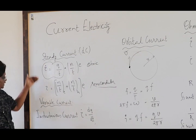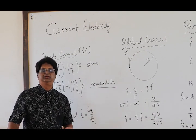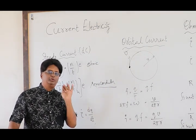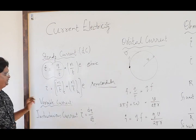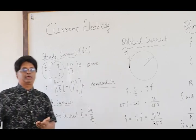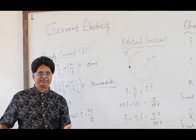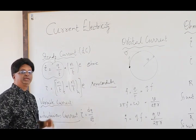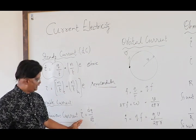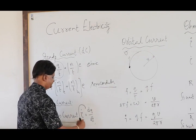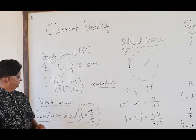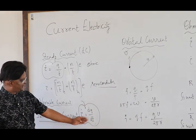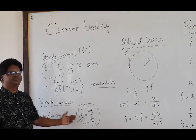That is about our steady current. Now we come to variable current — the current which varies in magnitude and maybe also in direction. In such variable cases, we always calculate what is called instantaneous current: I = dq/dt. This is the instantaneous current which arises in the case of variable current. We will show some simple examples in the latter course on how we take this derivative and calculate instantaneous currents.